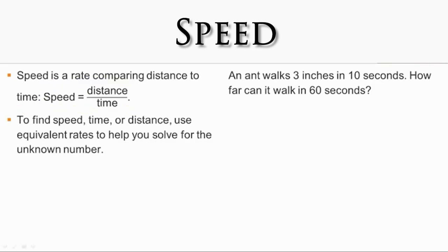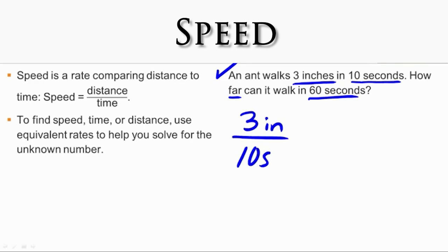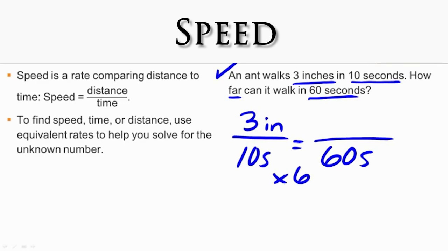Let's use those key concepts to solve this problem. An ant walks 3 inches in 10 seconds. How far can it walk in 60 seconds? We use the speed formula: speed equals distance over time. The ant's speed is 3 inches per 10 seconds. On the right side we have distance over 60 seconds — distance is the unknown. How do we get from 10 seconds to 60? We multiply by 6. Whatever we multiply the bottom by, we multiply the top by: 3 times 6 is 18 inches. The ant can walk 18 inches in 60 seconds.